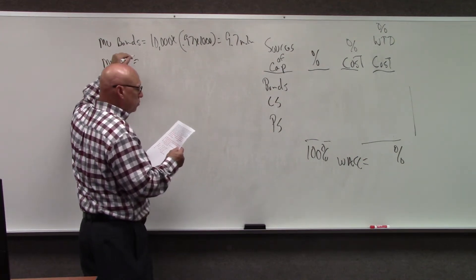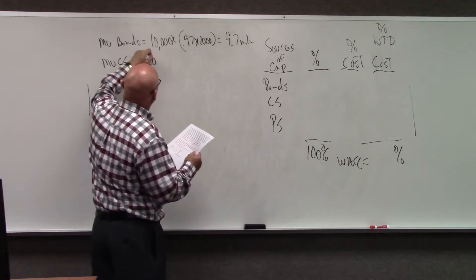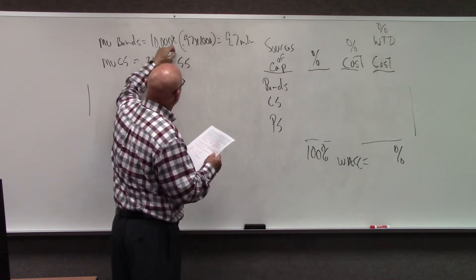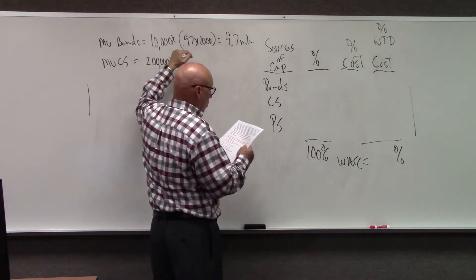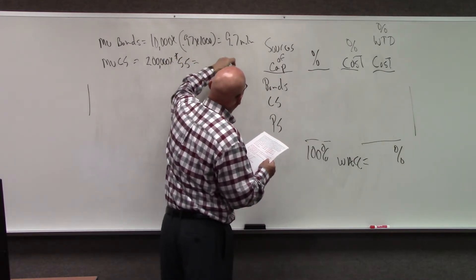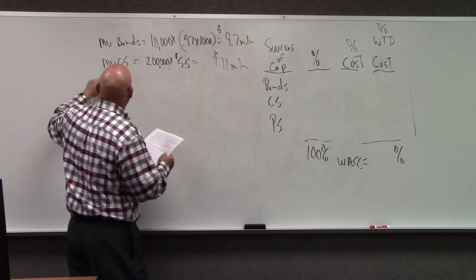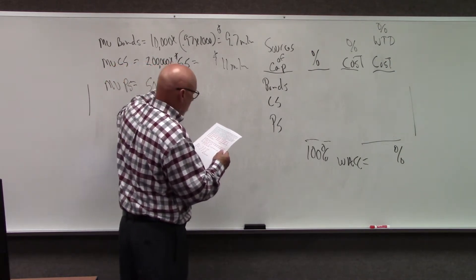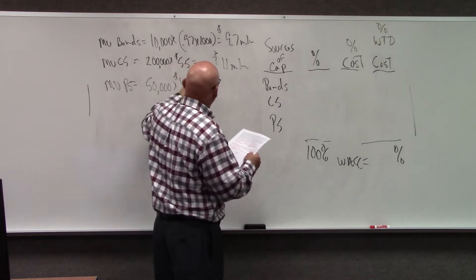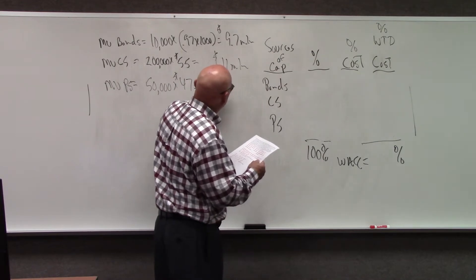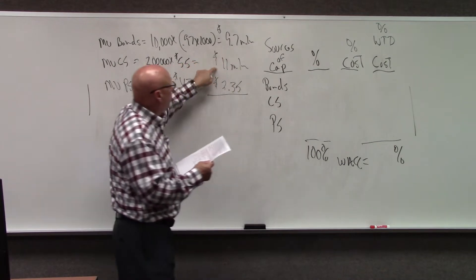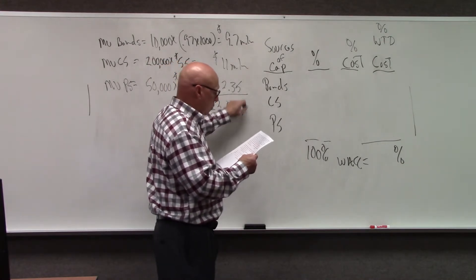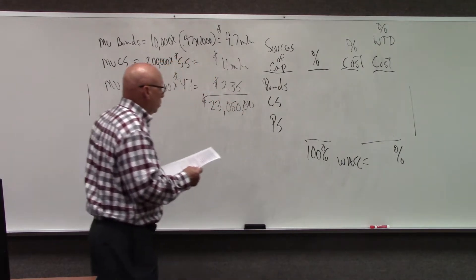The value of common stock: they have 200,000 shares at a current price of $55, which equals $11.8 million. The market value of preferred stock is 50,000 shares times $47, which is $2.35 million. Let's add them up: $9.7 million plus $11 million plus $2.35 million equals $23,050,000.